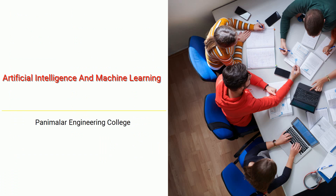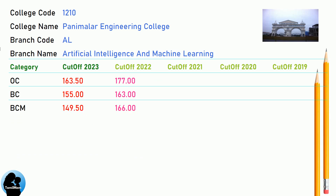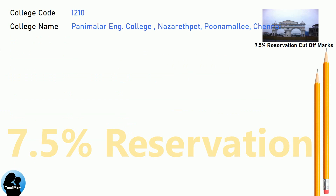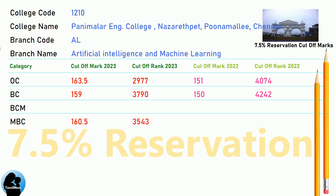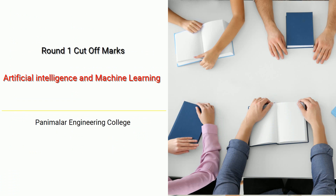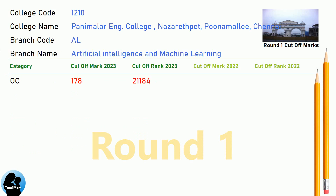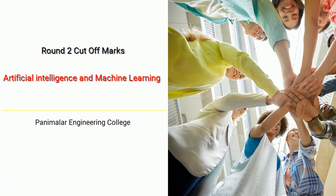DNA Cut-off for Panimalar Engineering College in Artificial Intelligence and Machine Learning. DNA 7.5 Reservation Cut-off for Panimalar Engineering College in Artificial Intelligence and Machine Learning. DNA Round 1 Cut-off for Panimalar Engineering College in Artificial Intelligence and Machine Learning.